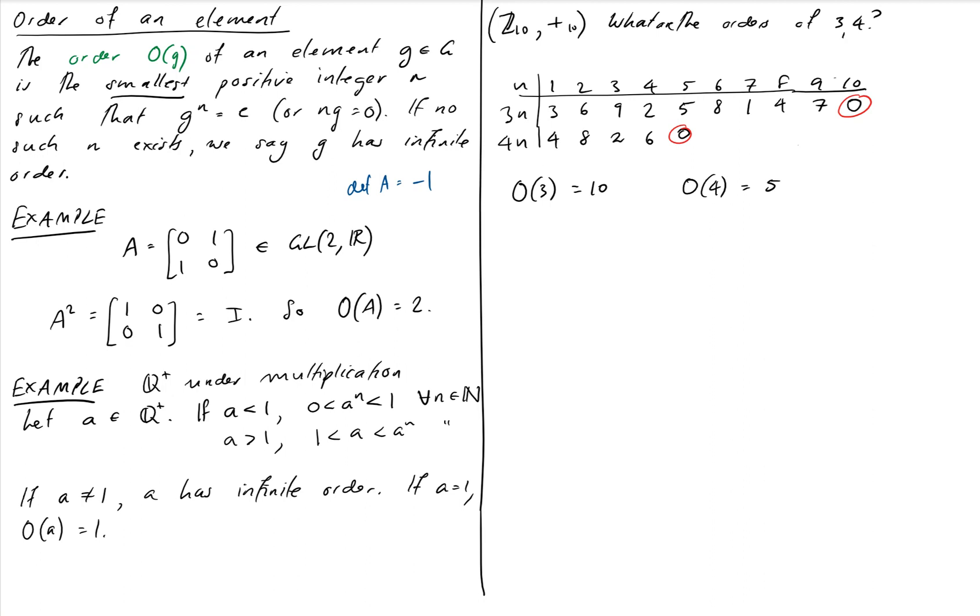So every element in every group has an order. It may be infinite, it may be finite. If we have an infinite group, like the matrices we had before, we can have elements with finite order. But if we have a finite group, and we'll prove this later on, we cannot have elements of infinite order. But we'll talk about what the orders of finite groups can be in a little bit more depth later on.